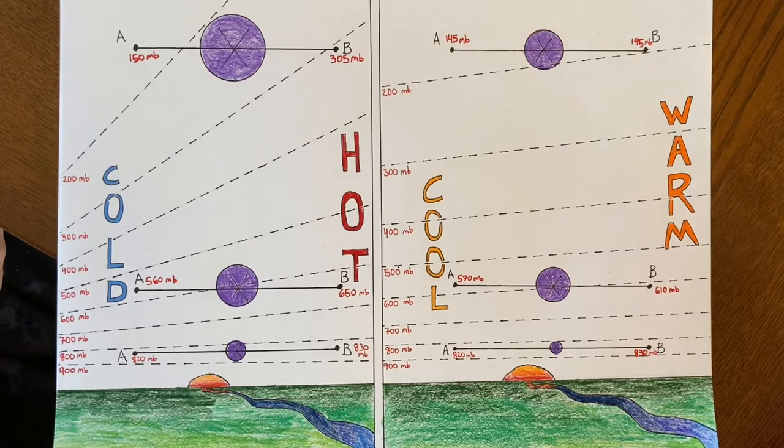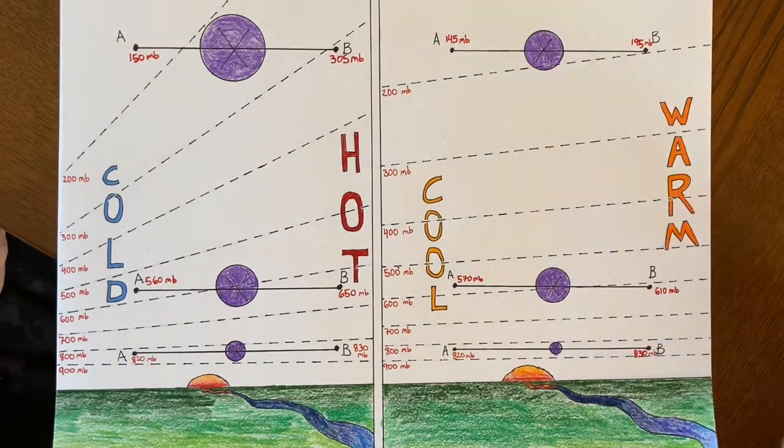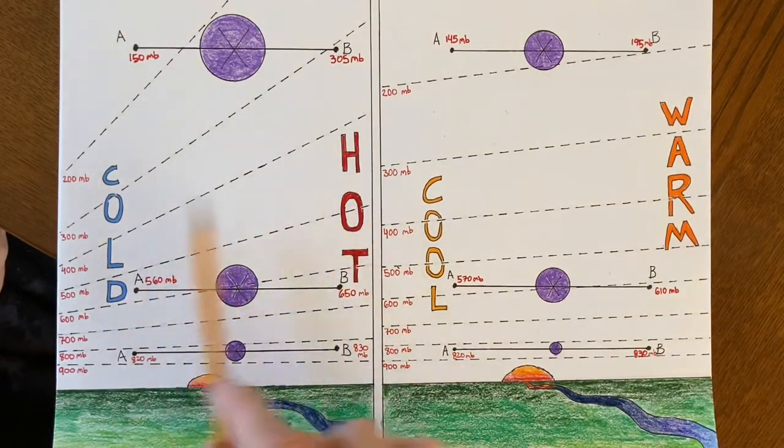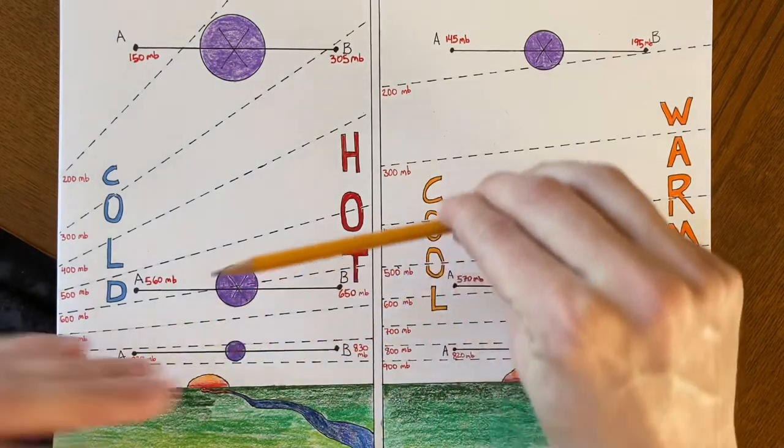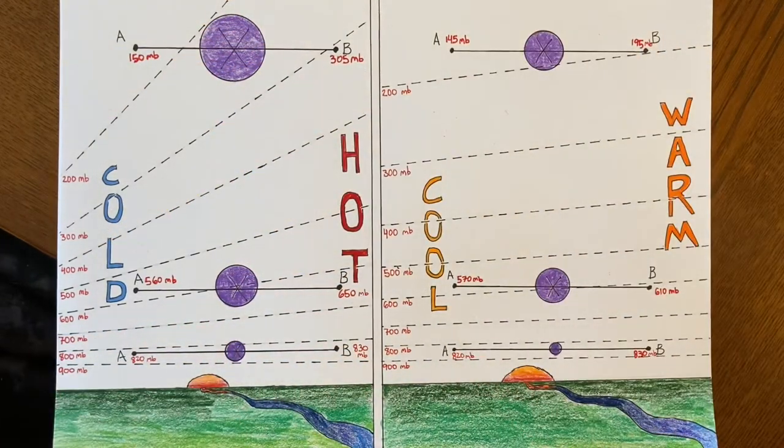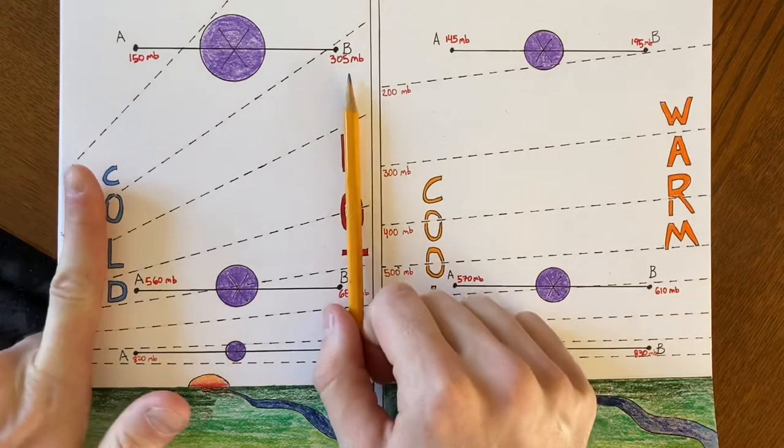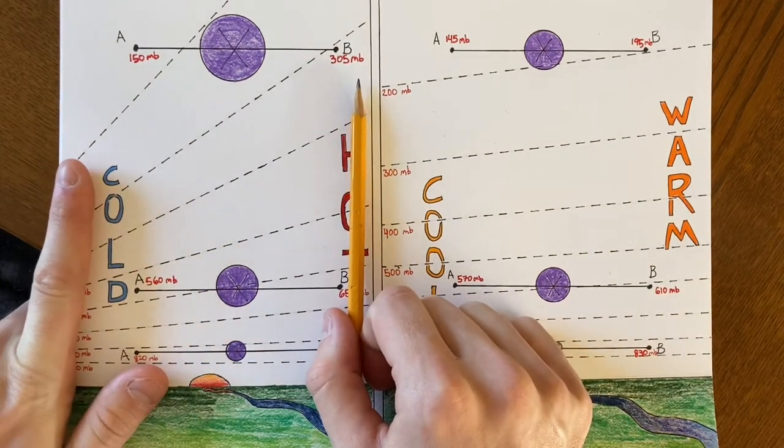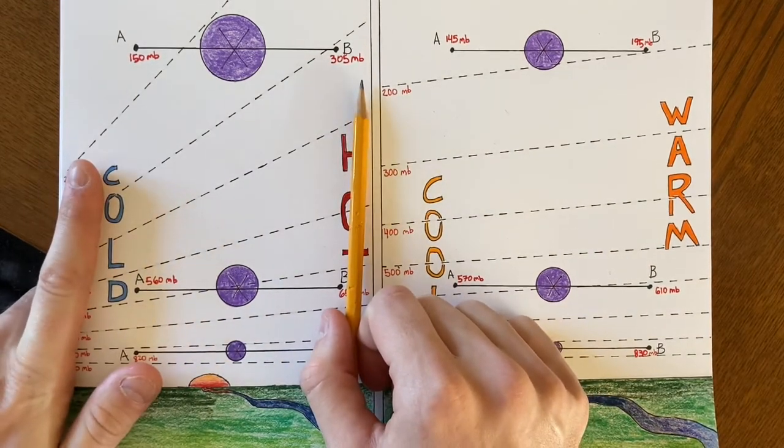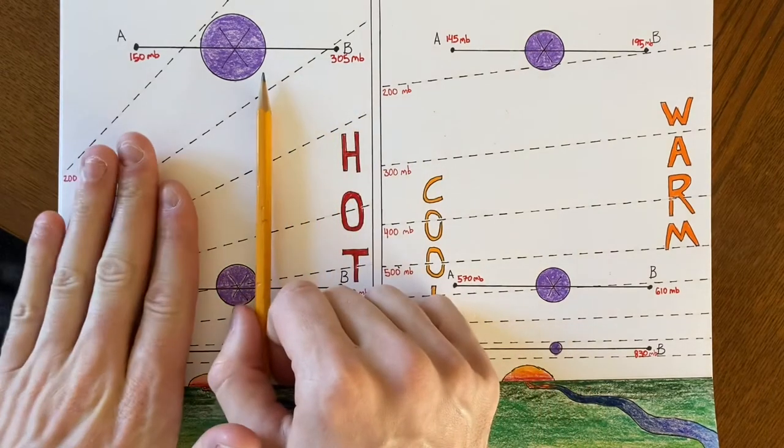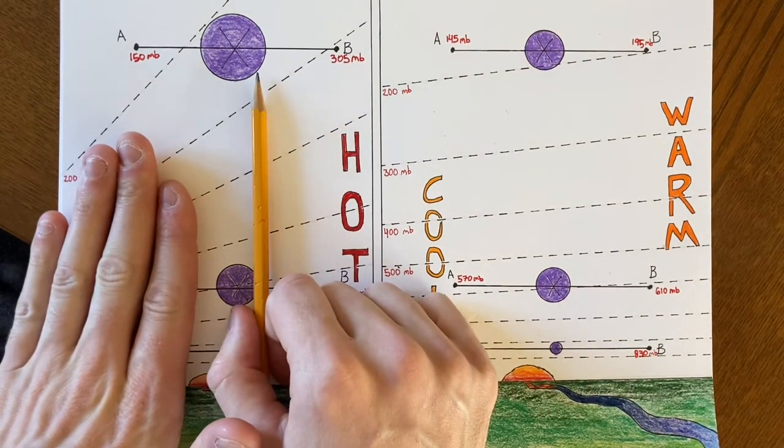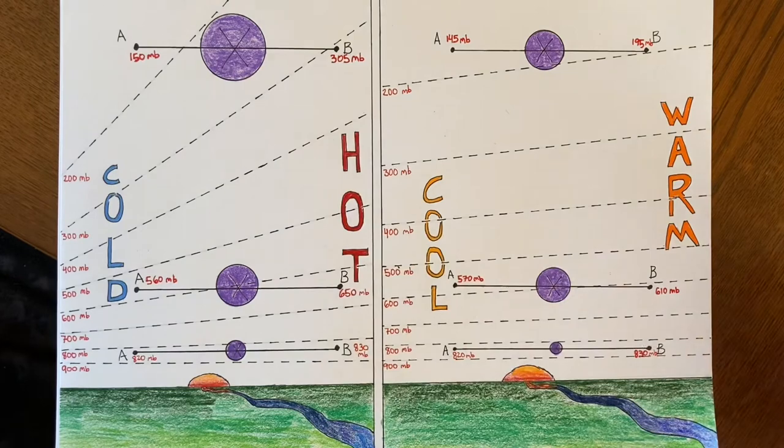And what causes the pressure levels to be tilted like that? It's the temperature difference, because the hot atmosphere expands up and the cold one shrinks down. So the greater the temperature difference between two air masses like this, and the shorter the distance it is over, the stronger these winds up here.